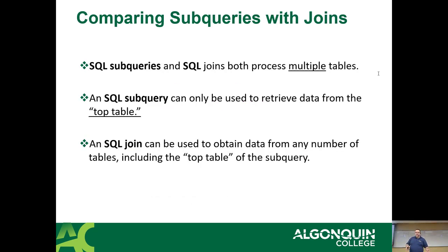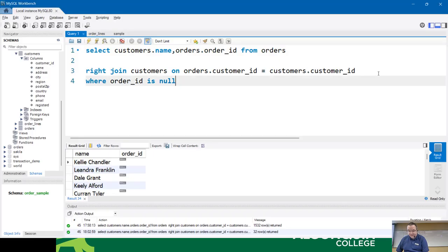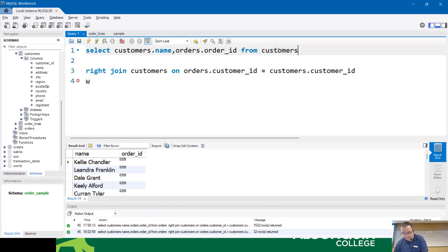Comparing subqueries to joins: subqueries and SQL joins both process multiple tables. A subquery can only be used to retrieve data from the outermost table - whatever table is at the outermost layer of all the subqueries is where the data comes from. A join can be used to obtain data from any number of tables, including the topmost table. This is where the aggregate thing becomes really nifty.